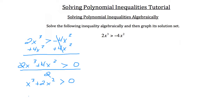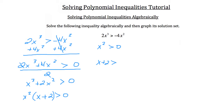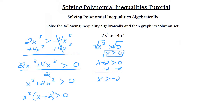Now I'm going to pull an x squared out of my terms on the left hand side. So I've got x squared times (x plus 2) is greater than zero. I can take each of these factors and set them equal to zero: x squared greater than zero gives x greater than positive or negative zero, and x plus 2 greater than zero gives x greater than negative 2.